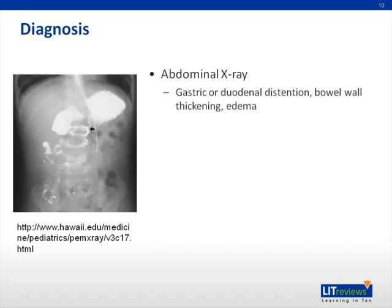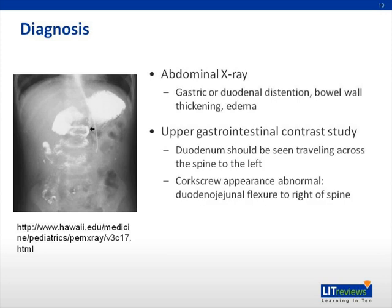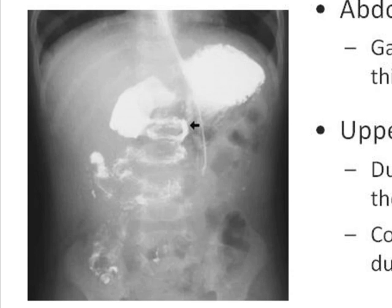To diagnose malrotation, an abdominal x-ray should be performed. This will show gastric or duodenal distension, bowel wall thickening, and edema. An upper gastrointestinal contrast study should also be obtained. This will show the duodenum traveling across the spine to the left. A corkscrew appearance is abnormal. A duodenal-jejunal flexure will be seen to the right of the spine, as demonstrated in this image.